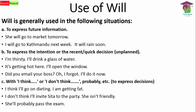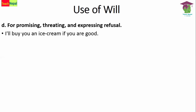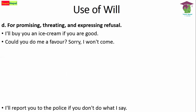The fourth use of 'will' is for promising, threatening, and expressing refusal. For example: 'I will buy you an ice cream if you are good' — this is a promise. 'Sorry, I won't come' — this is a refusal, where 'will' is used in its negative form 'won't.'